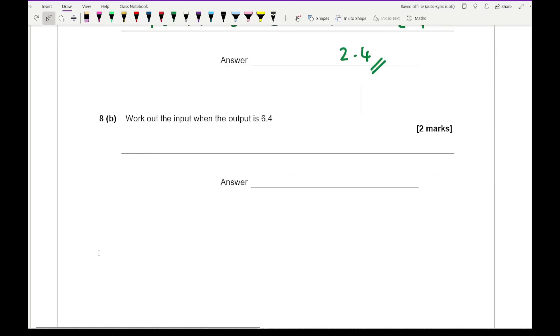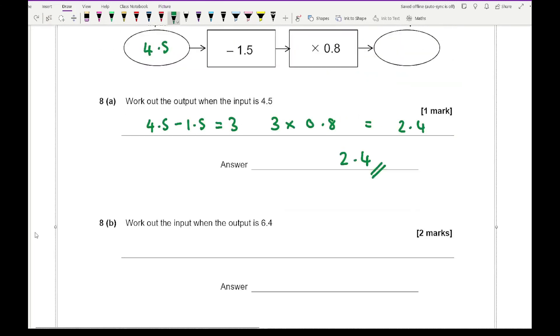Question B says work out the input when the output is 6.4. I'm going to do 6.4 divided by 0.8, which as a fraction seems easier. That becomes 64 over 8, which is 8, then add 1.5, which becomes 9.5.